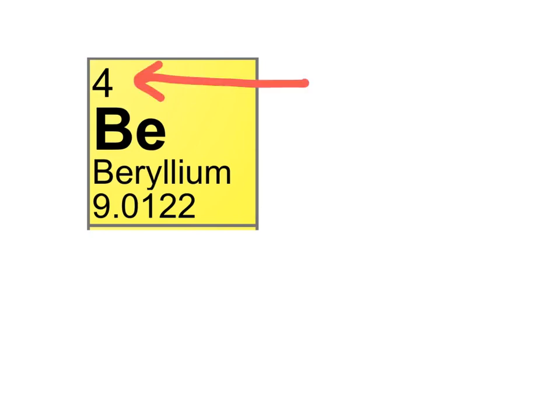The first thing we should do is look at the atomic number. This is the number four for beryllium. The atomic number tells us the number of protons an atom has.